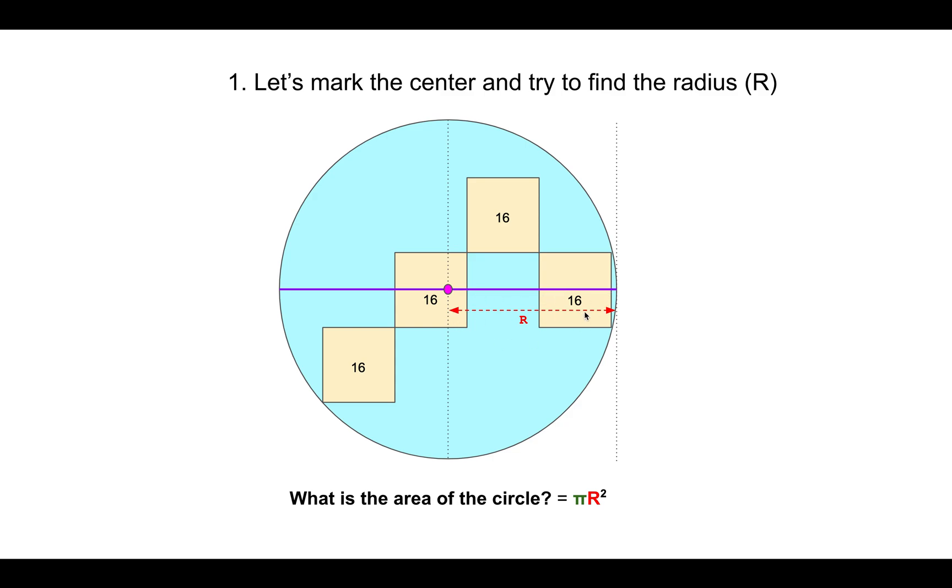As you can notice, this would be the radius of the circle. And if we knew the radius of the circle, well the area is straightforward—it would be πr². So how can we find the radius of this circle?